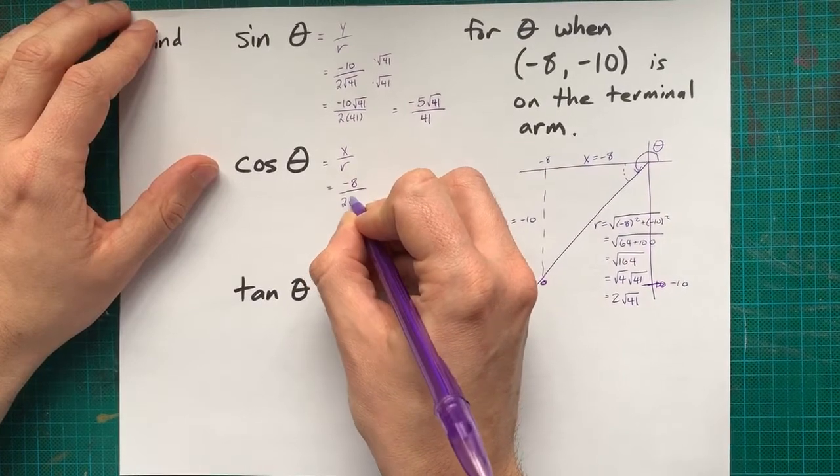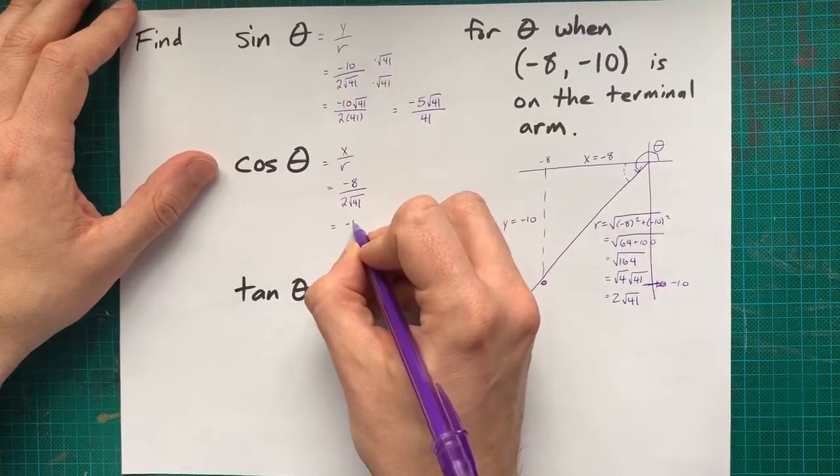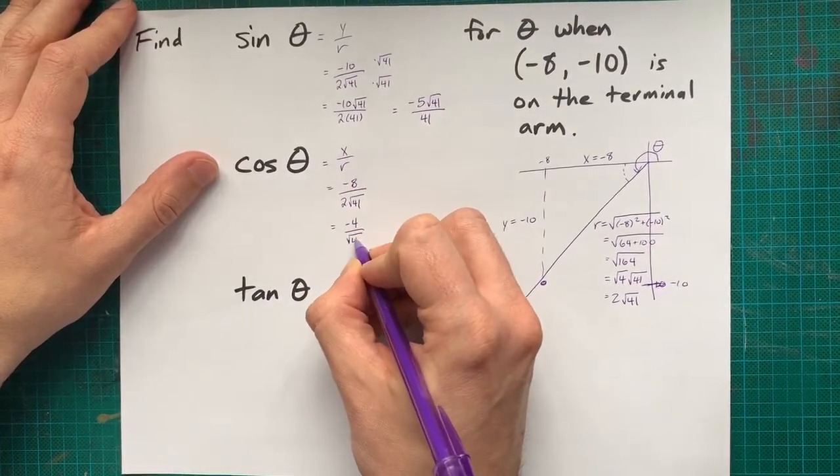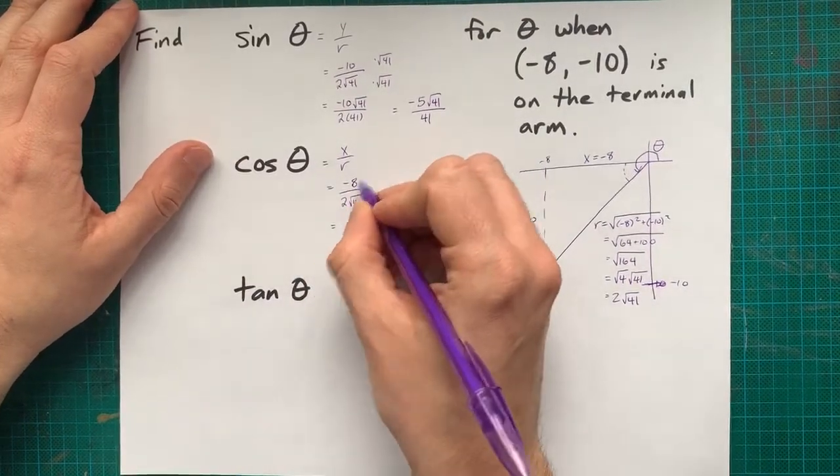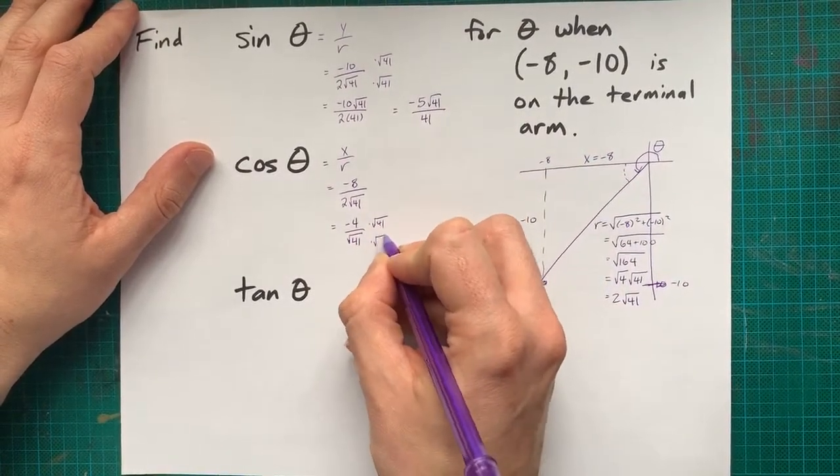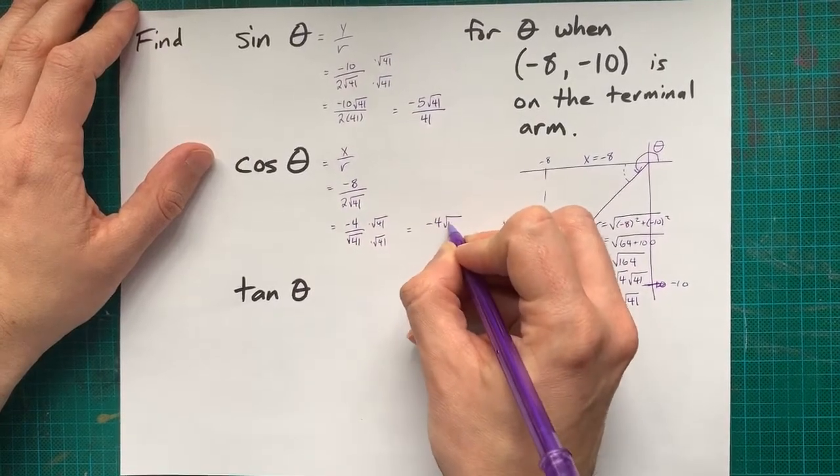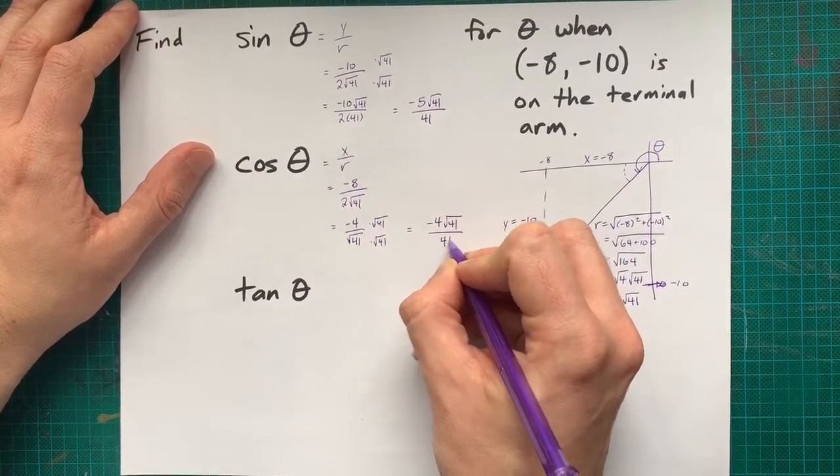Negative 8 over 2 root 41. You can reduce this right off the bat if you want. That's negative 4 over root 41. I reduce the 8 and the 2, see? But I still have to rationalize the denominator. I end up with negative 4 root 41 over regular 41.